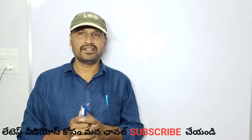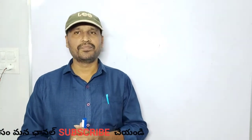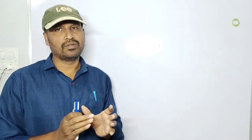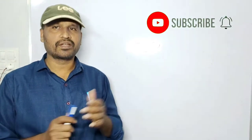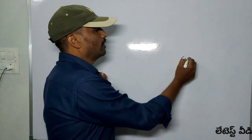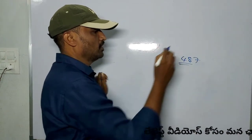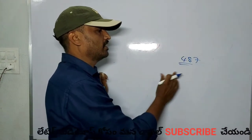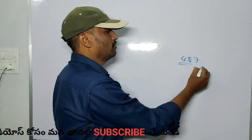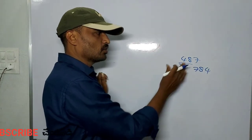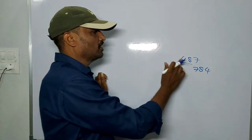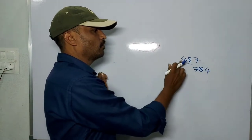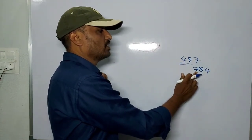The trick or the logic of this puzzle: if you have three-digit numbers, you can reverse the big number and subtract. For example, if you have 784, you can reverse the digits.